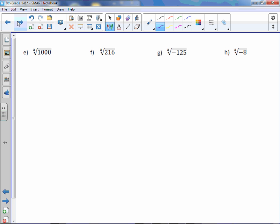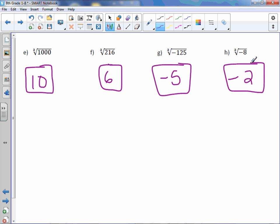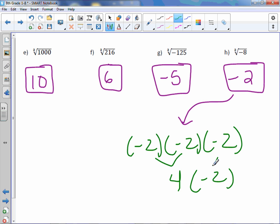Letter E, cube root of 1000. You will get an answer of positive 10. Cube root of 216 is 6. Cube root of negative 125 is negative 5. And the cube root of negative 8 is negative 2. And again, let me just take H and re-explain. What this means is negative 2 times negative 2 times negative 2 equals negative 8. Well, let's check it. Negative 2 times negative 2 is positive 4. Bring down your last number. And 4 times negative 2 is, in fact, negative 8.